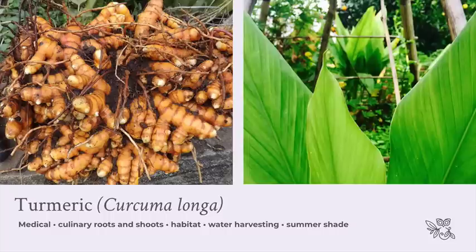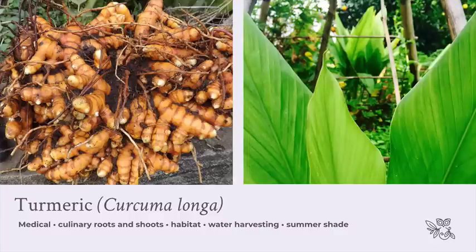Turmeric's root is edible, but also the leaf — young leaves can be chopped in salads or used as a leafy spinach green, and larger leaves can be wrapped around fish and baked. I also really appreciate turmeric in the garden for the structure and shade it provides in summer, and because the form of its leaves acts like a water harvesting system — collecting dew and rain and funneling it down into the garden in situ. Many, many uses warranted it being on my top 10 list.